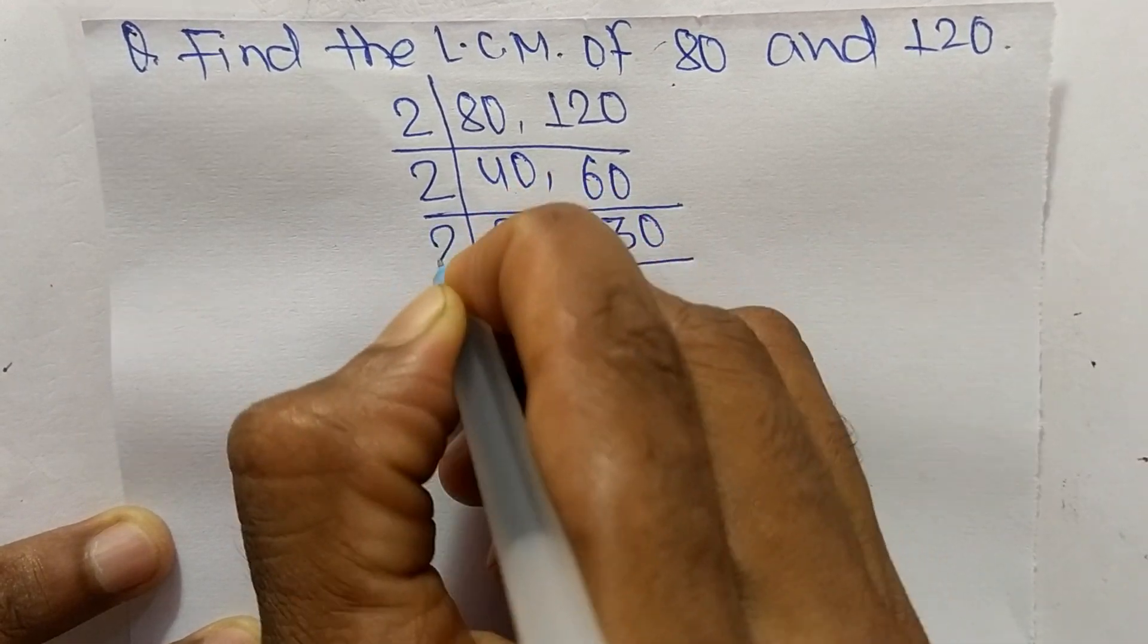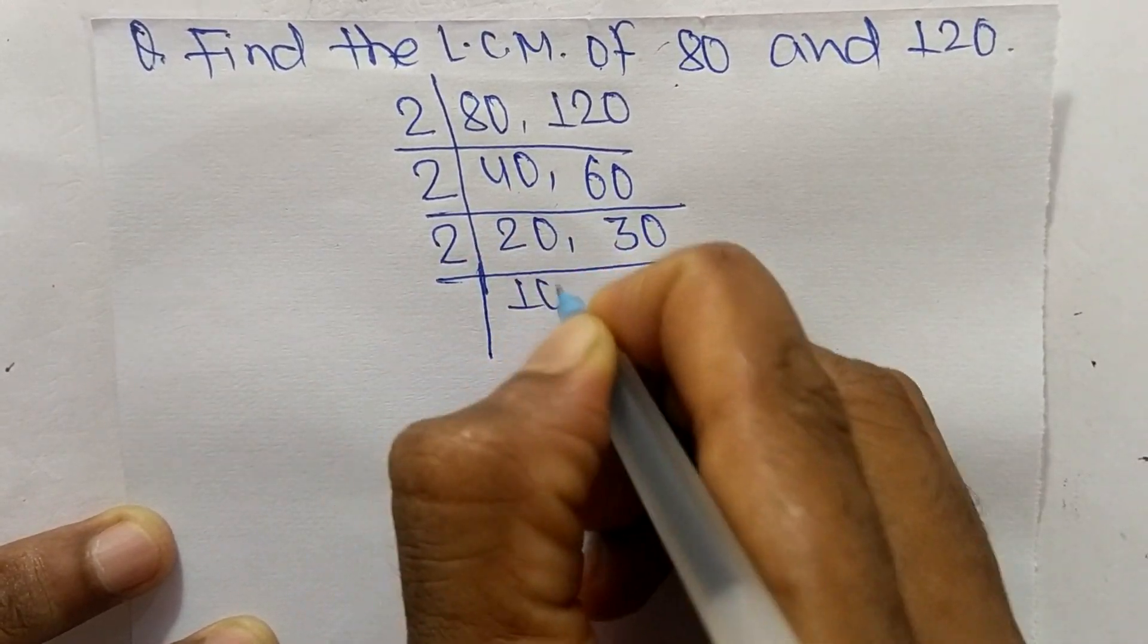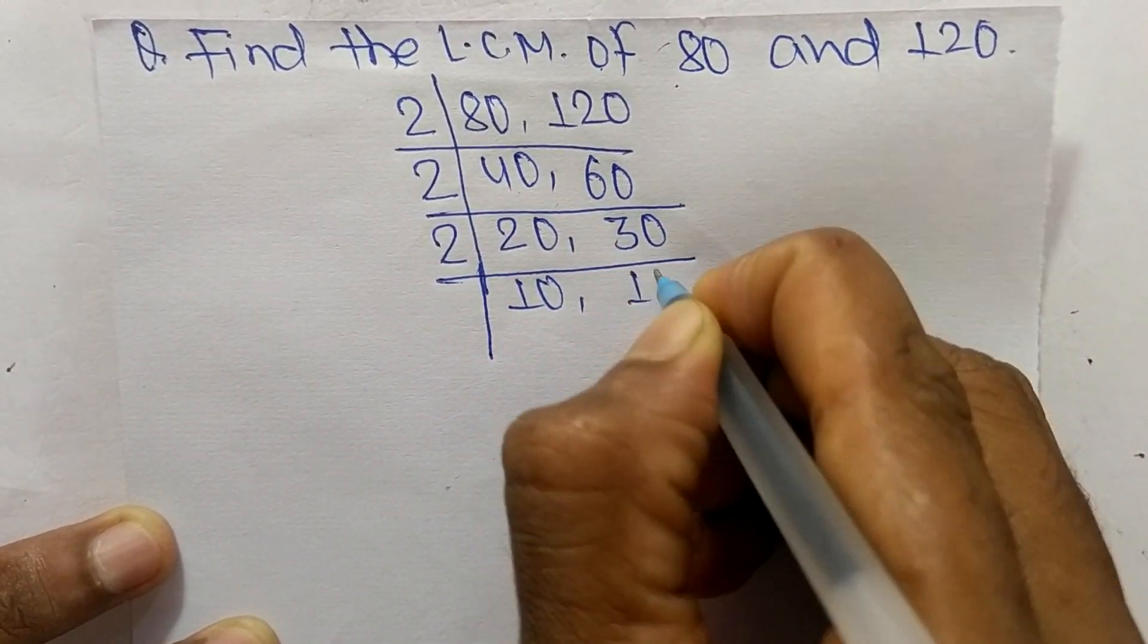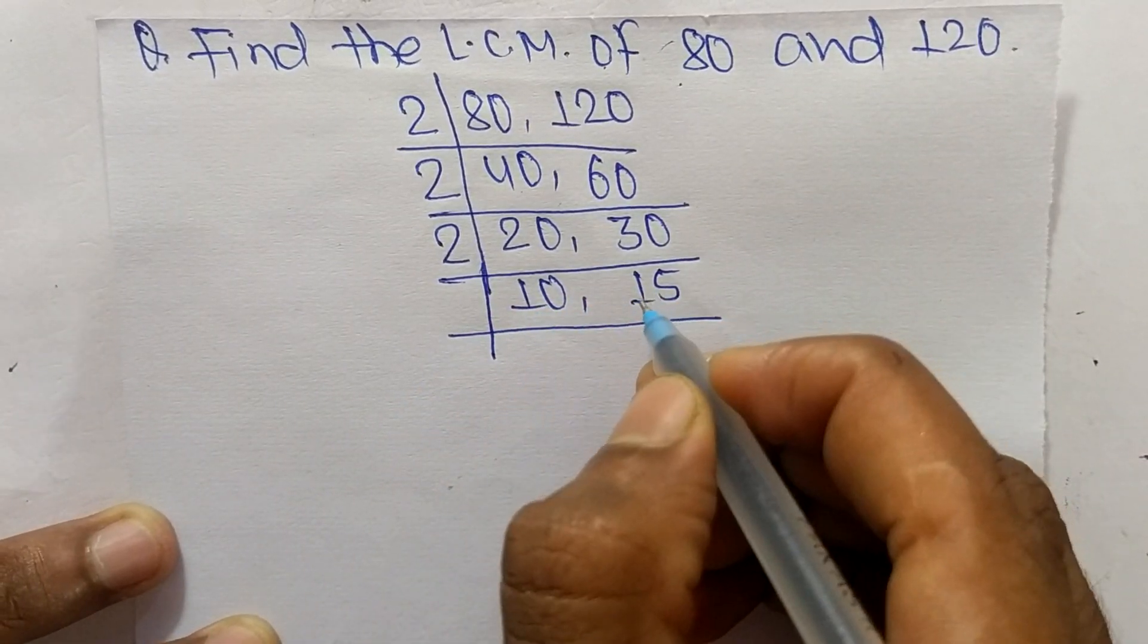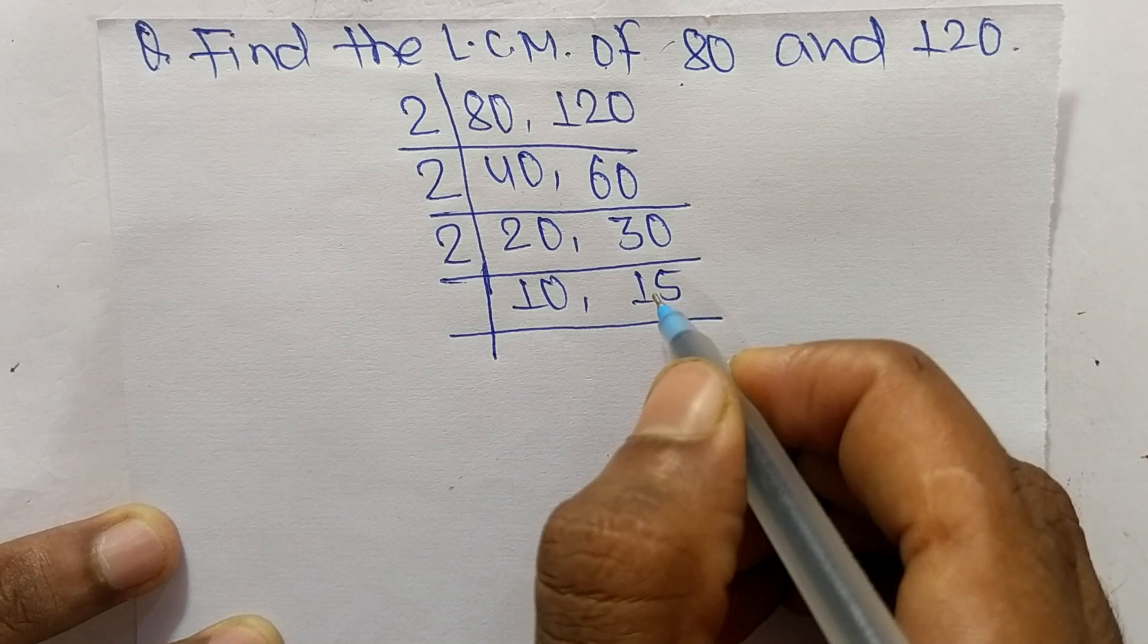Again it is divisible by 2. So 2 times 10 equals 20, 2 times 15 equals 30. Now these both numbers are not divisible by 2.